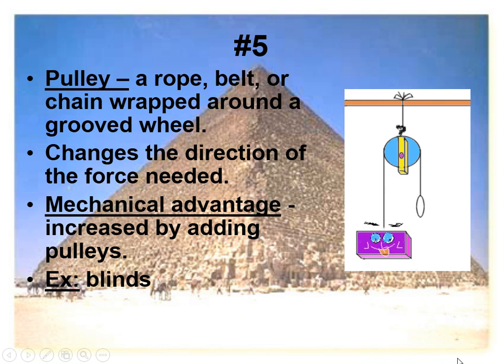Number five is a pulley — a rope, belt, or chain wrapped around a grooved wheel. Adding more pulleys increases the mechanical advantage. Instead of having gravity work against you when lifting something, by pulling on the pulley, gravity now works with you. With enough pulleys, you could lift a car with just one hand.